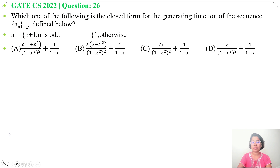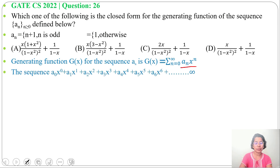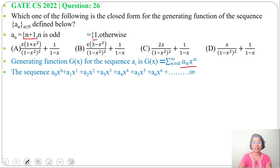It is asking which one of these options is the closed form of this sequence. It's a generating function, so we can write the summation of n equals 0 to infinite: a_n multiplied by x^n. The sequence will be a_0 x^0 + a_1 x^1 + a_2 x^2 + a_3 x^3, and so on. We'll substitute values for a_n: it will be n+1 if n is odd, else it is 1.